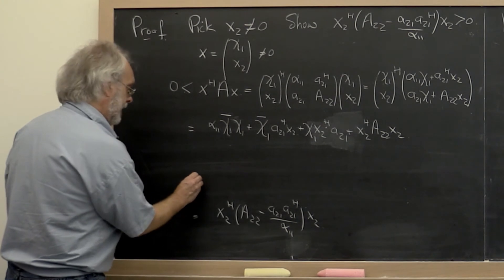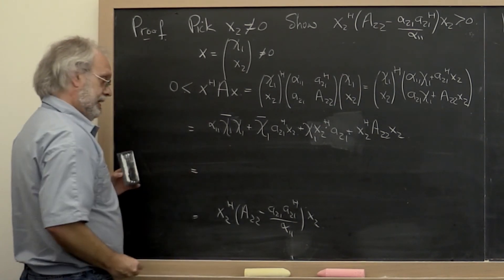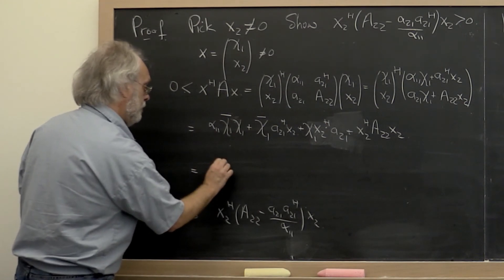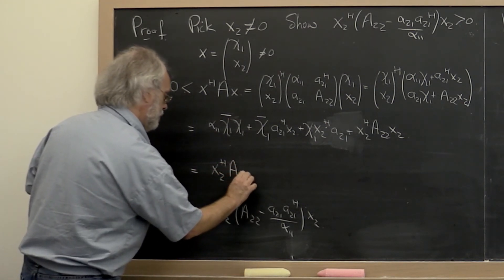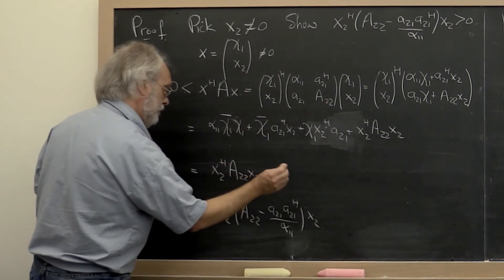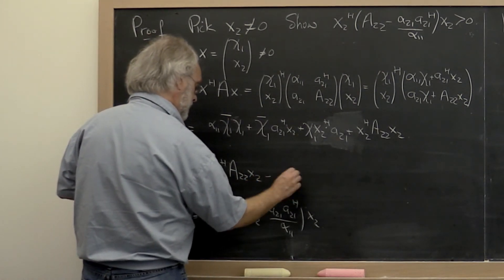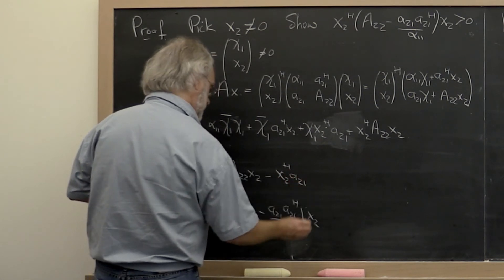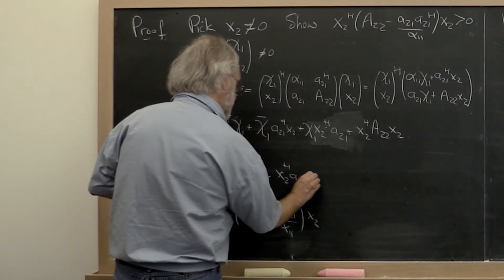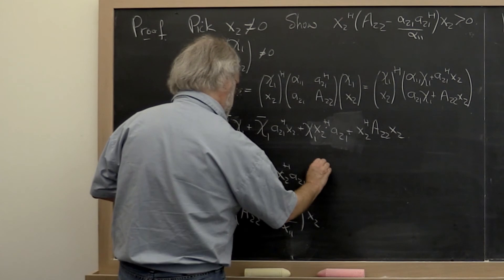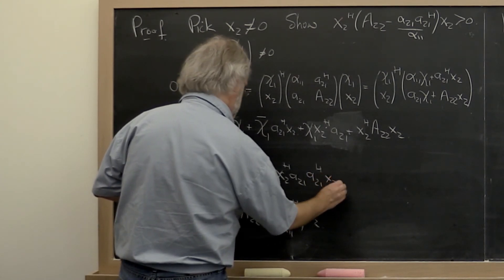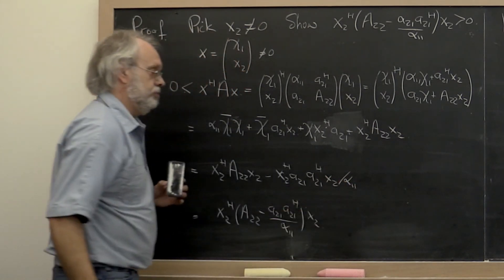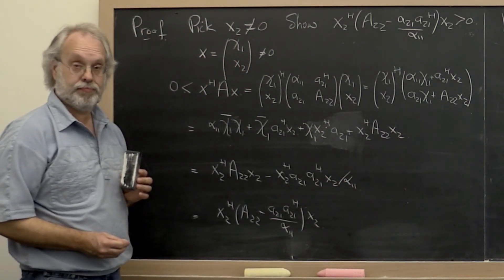And if we work that out, that means that all of this needs to boil down to x2 Hermitian A 2 2 x2 minus x2 Hermitian A 2 1 times A 2 1 Hermitian x2 divided by alpha 1 1.